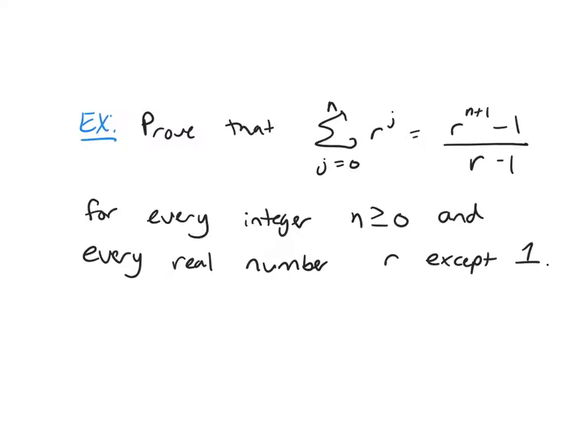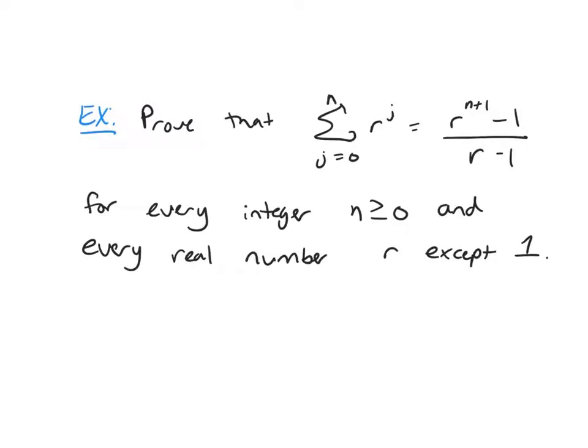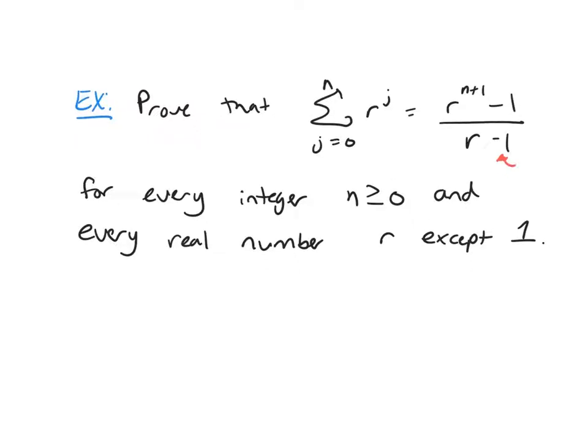Now r cannot be 1. If you look at the right-hand side of our formula here, if r was allowed to be 1, we would get 0 in the denominator. So we want to prove this using mathematical induction.